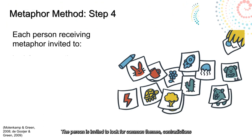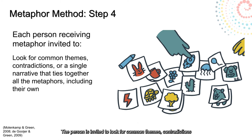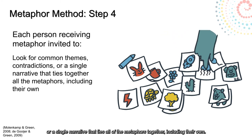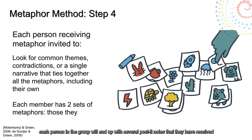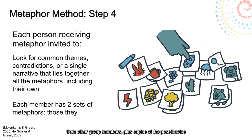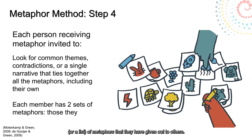In step four, the person is invited to look for common themes, contradictions, or a single narrative that ties all of the metaphors together, including their own. When everyone has had their turn at the end of this process, each person in the group will end up with several post-it notes that they have received from other group members, plus copies of the post-it notes or a list of metaphors that they have given out to others.